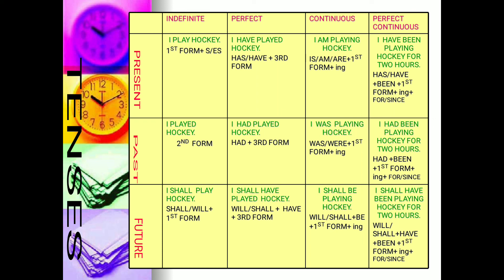To recap all 12 tenses: I play hockey, I played hockey, I shall play hockey. I have played hockey, I had played hockey, I shall have played hockey. I am playing hockey, I was playing hockey, I shall be playing hockey. I have been playing hockey, I had been playing hockey, I shall have been playing hockey for two hours. Thank you very much.